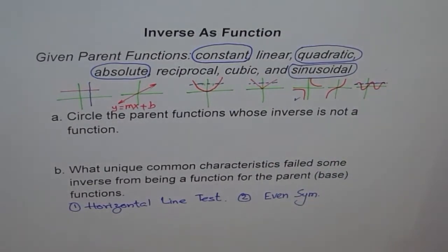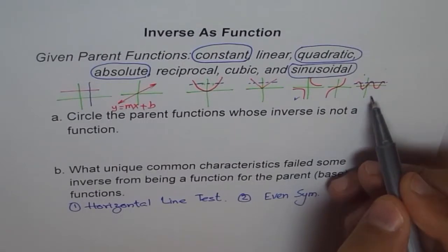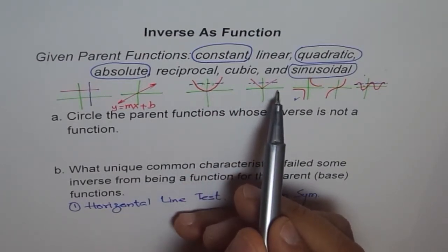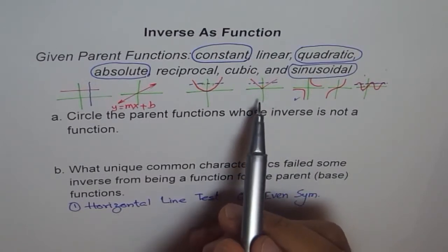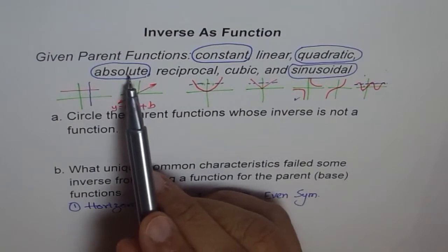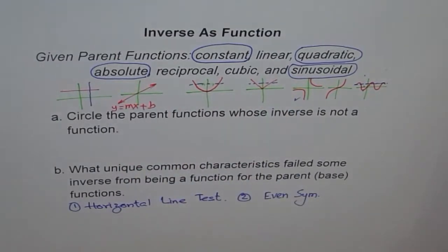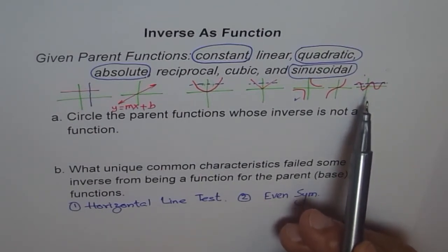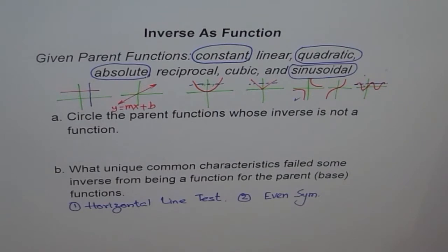Unless we restrict the domain — if we restrict the domain, these functions can be made to have inverses that are functions. For example, restricting the quadratic to [0, ∞) works. But in general, where the domain is all real numbers, these are the functions whose inverse will not be a function. The two key characteristics to identify them are: the horizontal line test (the main one) and even symmetry. Note that cosine also has even symmetry. I hope you understand — thank you.